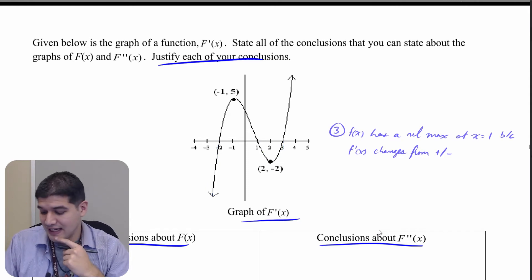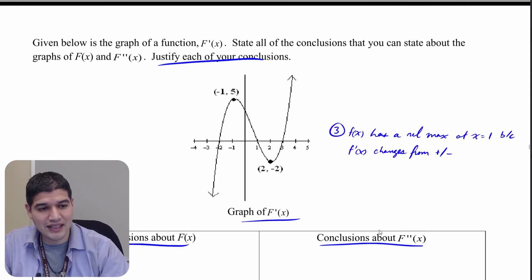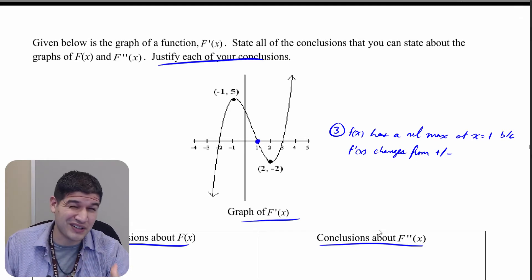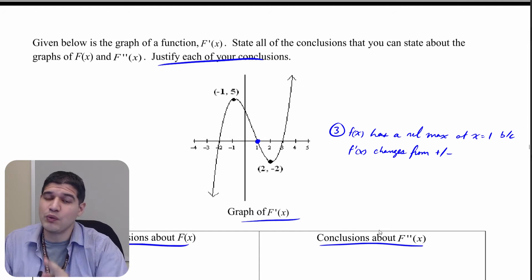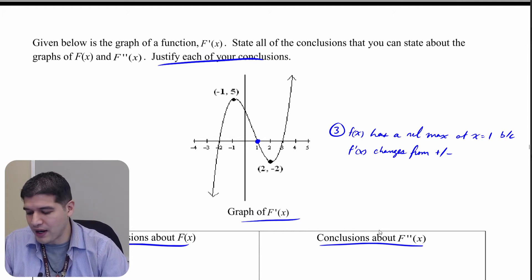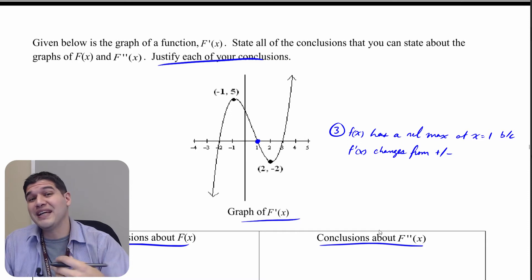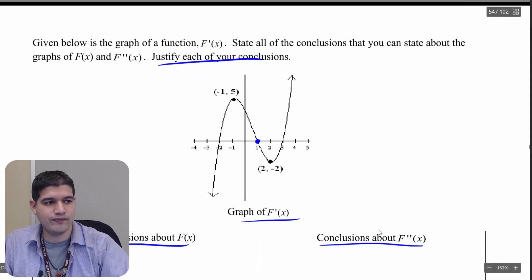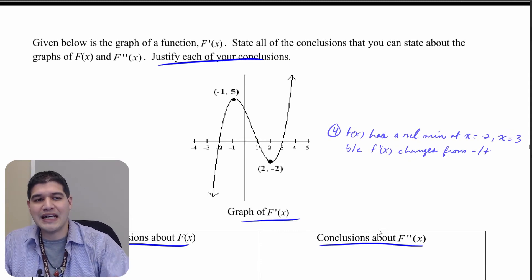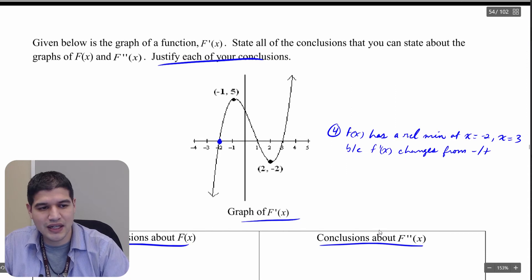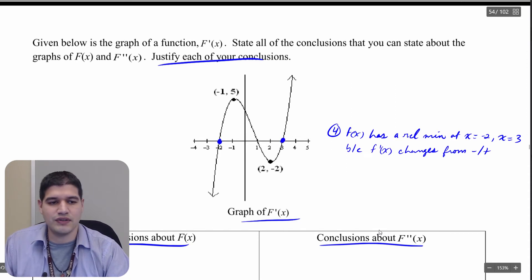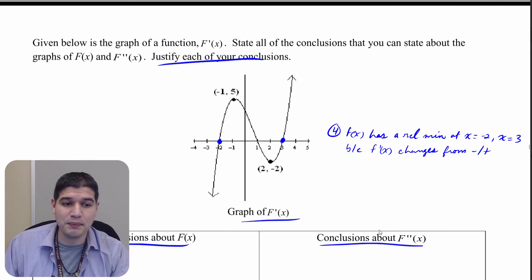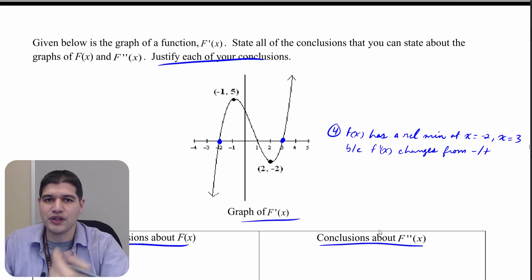F of x is going to have a relative maximum at x equals 1 because f prime is going from positive to negative there, meaning the graph of f goes from increasing to decreasing. Along with that, we're going to have relative minimums at x equals negative 2 and x equals 3, because f prime is changing from negative to positive at both of those x-values.